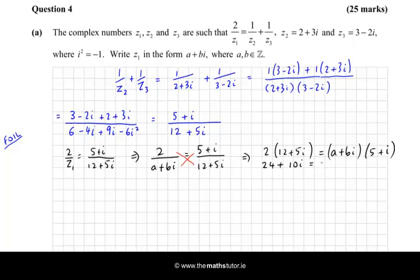On the right, I will use the FOIL technique again. So the first is 5 by a, so that's 5a. The outside is a times i. The inside is 5bi. And the last is bi times i, so that's plus bi squared, which again is plus b times minus 1. So let's tidy that up a bit. Let's get the real parts and the imaginary parts. The real parts is 5a minus b, and then the imaginary parts is plus a plus 5b times i.